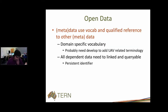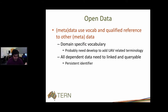The next principle is data use vocabulary and qualified references to other metadata. We use a fair bit of domain-specific vocabulary — GCMD is quite popular, especially for keyword search. Because drone technology has evolved so fast, it may be necessary to invent some terminology and incorporate it into the vocabulary so that it is accurately represented. Each of the different data types and files should be referenced, made as a link, and hopefully as a persistent identifier, and all those should be queryable as well.